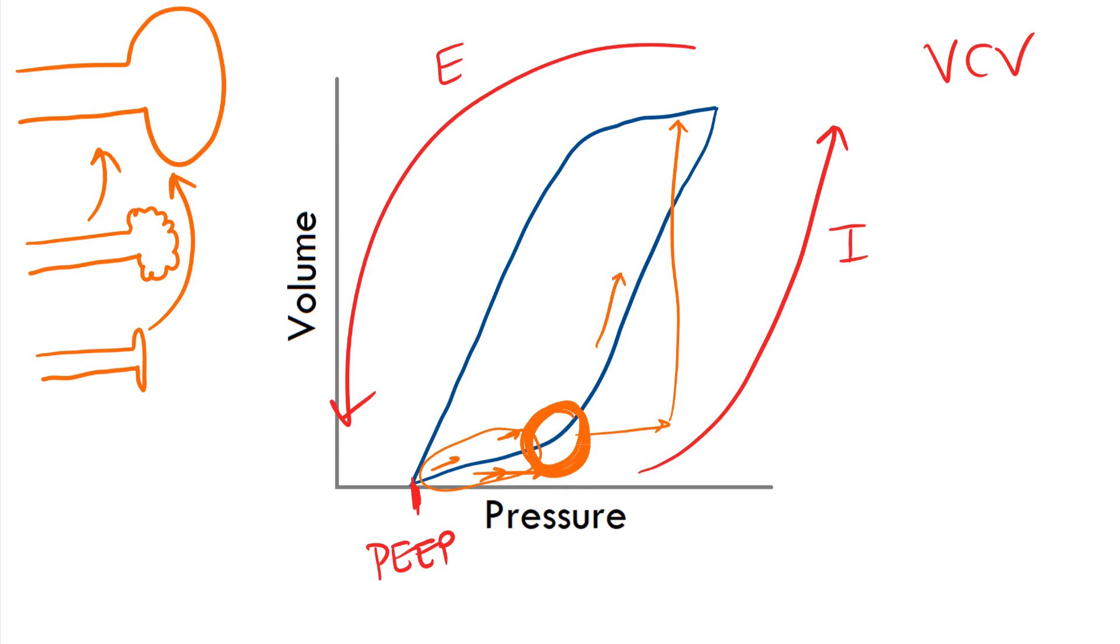So, as we go up this line here, we reach this point here. So, this pressure right here is your peak airway pressure. And the volume associated with that is the tidal volume that you've set.